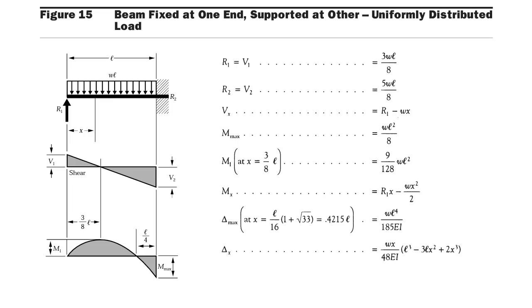Note: for a simply supported beam with UDL, the deflection is 5wl⁴ / 384EI, but for this fixed-simply supported case, the maximum deflection is wl⁴ / 185EI, occurring at 0.4215l.